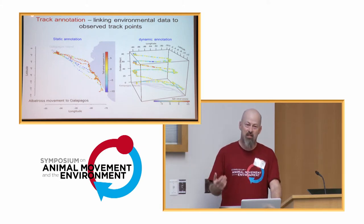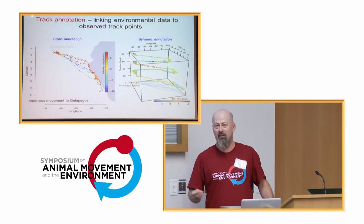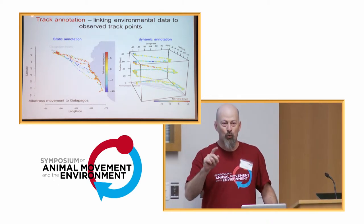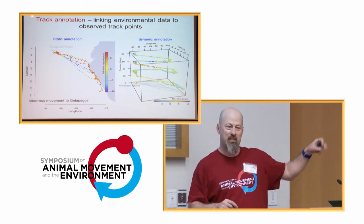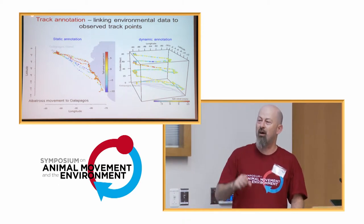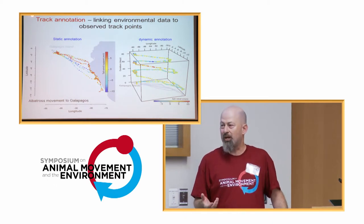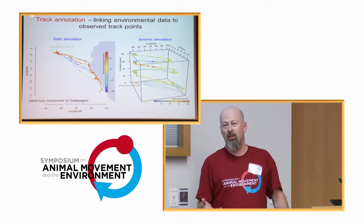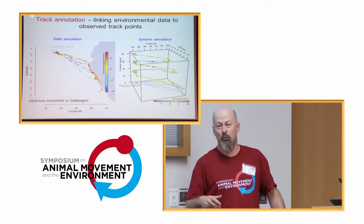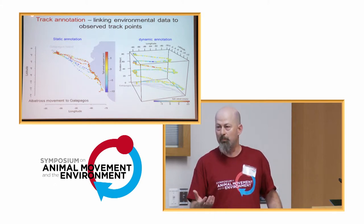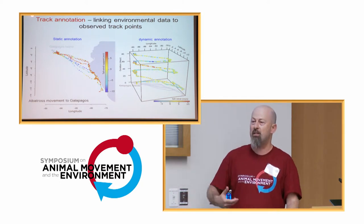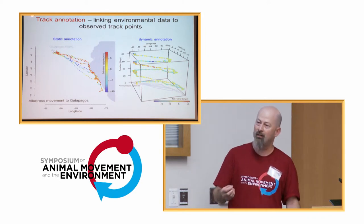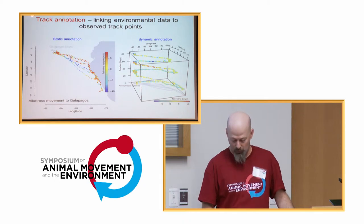The next concept is track annotation. The term comes from web browsing - when you browse the web, Google annotates every site in your track with other variables. We took this term and related it to animal movement. We now have tools to not only know where the animal has been, but what was there - what was the environment the bird, animal, or whale experienced while moving.